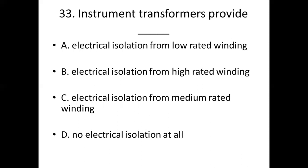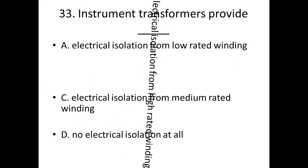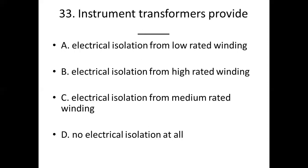33rd bit. Instrument transformers provide dash. Option A: electrical isolation from low rated winding. Option B: electrical isolation from high rated winding. Option C: electrical isolation from medium rated winding. Option D: no electrical isolation at all. Answer: Option B, electrical isolation from high rated winding.